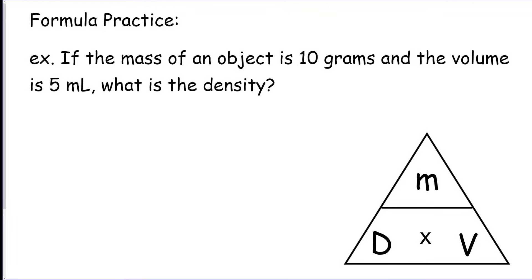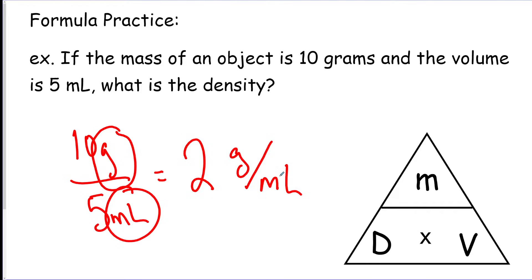Here is an example of a question with the formula. If the mass of an object is 10 grams and the volume is 5 milliliters, what's the density? So what you would want to do is you would want to take your 10 grams and divide it by your 5 milliliter volume, which would be 2. Your unit's going to be whatever the top unit is, so grams, slash whatever the bottom unit is, so this would be milliliters. And there's your final answer.